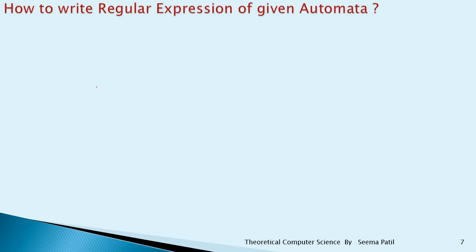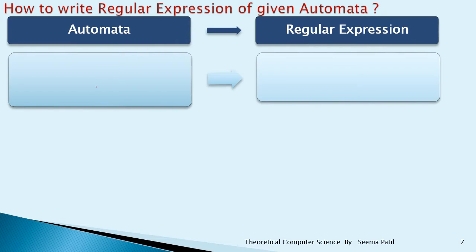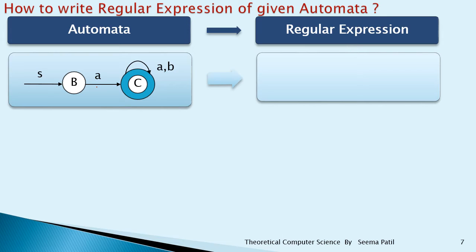The next automata is denoted by two states B and C, with two input values A and B given, and S is the starting symbol. For this, you have to write the regular expression as A(A + B)*.